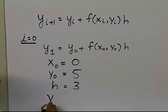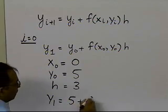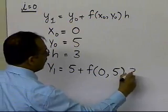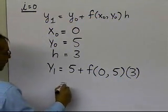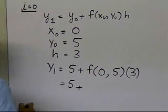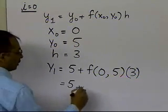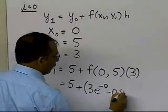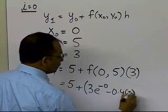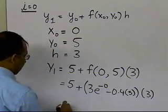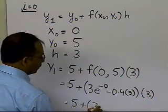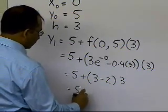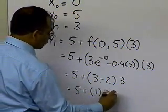So y1 equals y0, which is 5, plus the value of the function at x0 equals 0 and y0 equals 5, times h equals 3. That gives me 5 plus — the function value at (0, 5) is 3e to the power minus 0 minus 0.4 times 5 — times 3. So that gives me 5 plus 3 minus 2, times 3, which is 5 plus 1 times 2, giving me 8.